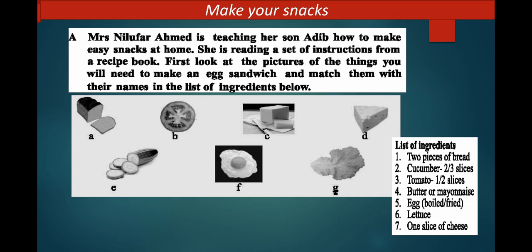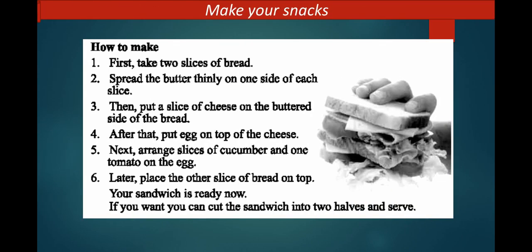Now let's go to the next slide. How to make a sandwich. First, take two slices of bread. Number two, spread the butter thinly on one side of each slice. Number three, then put a slice of cheese on the buttered side of the bread. Number four, after that put egg on top of the cheese.